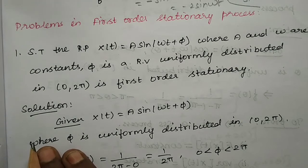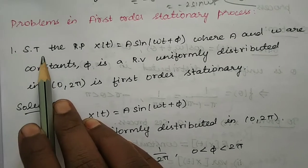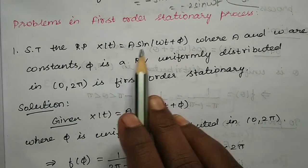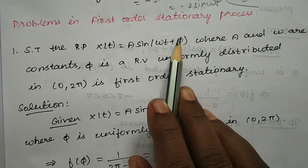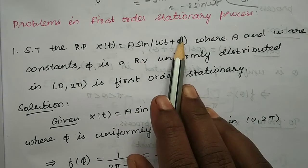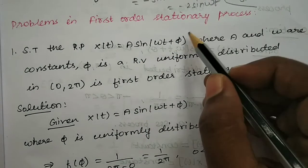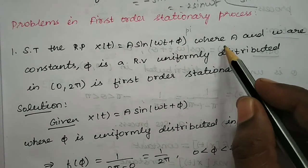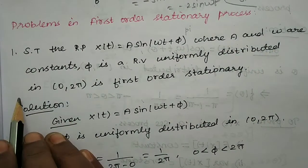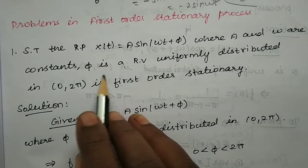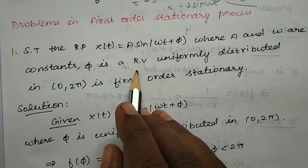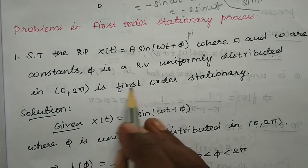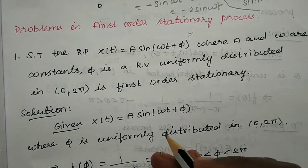So now we will look at problems. First one: show that the random process x of t equal to A sin(ωt + φ), where A and ω are constants. φ is a random variable uniformly distributed over [0, 2π] — is first order stationary.